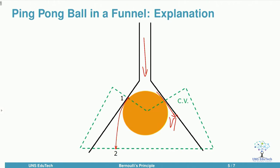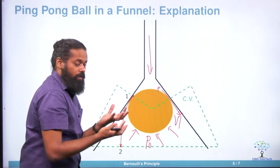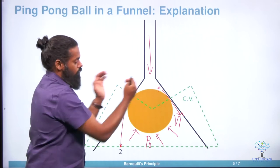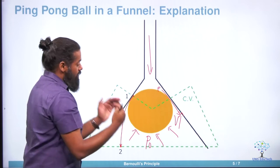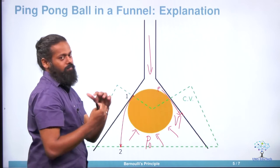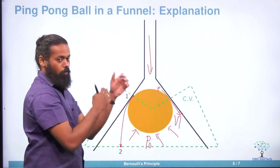When velocity goes up, by Bernoulli's principle, pressure at that region goes down compared to atmosphere. The atmospheric pressure P0 is present on the outside and pushes the ball inward. Because of this low pressure, the ball gets sucked into that corner — that is why the ball does not fly away.